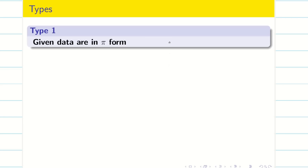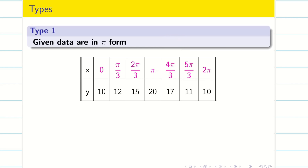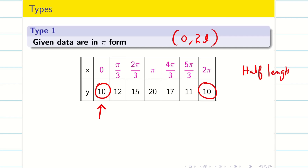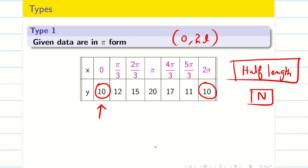There are four types of problems in harmonic analysis. The first one is the pi form, where the problem is given in terms of pi. Since pi is 180 degrees, the x values look like 0, π/3, 2π/3, etc. For any form, the first important things to find are the half-length and capital N. I will tell you how to find them for any given problem.